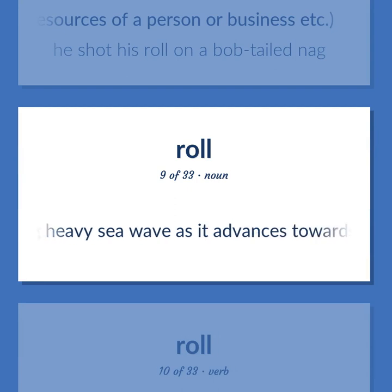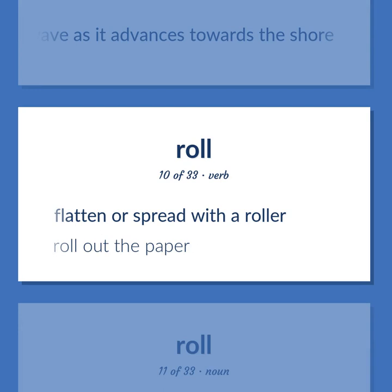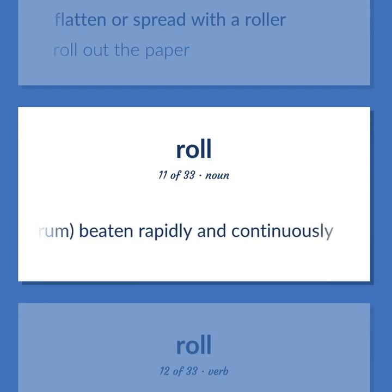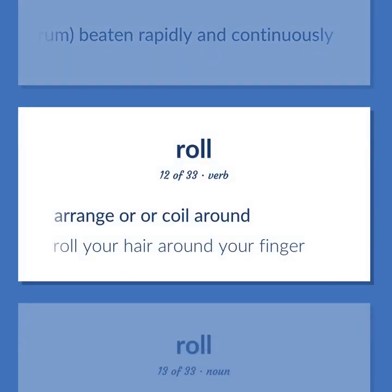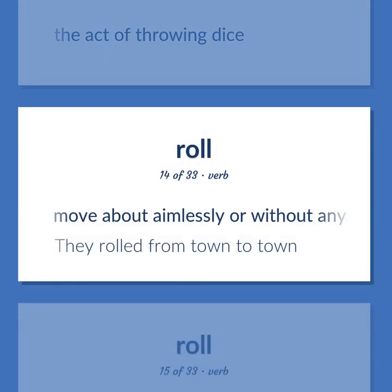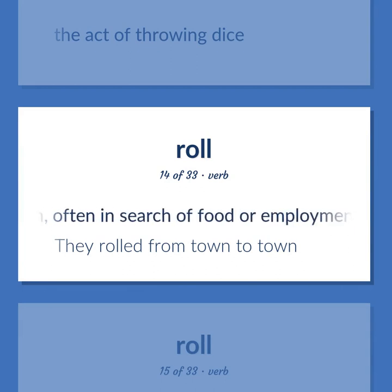Roll: a long heavy sea wave as it advances towards the shore. To flatten or spread with a roller — roll out the paper. The sound of a drum, especially a snare drum, beaten rapidly and continuously. To arrange or coil around — roll your hair around your finger. The act of throwing dice. To move about aimlessly or without any destination, often in search of food or employment — they rolled from town to town.